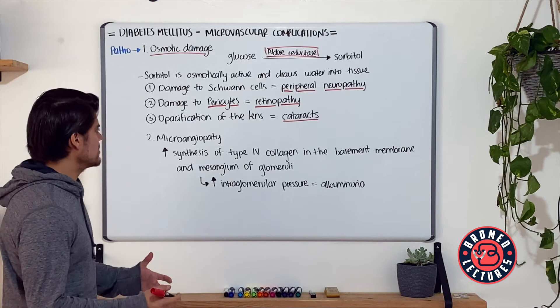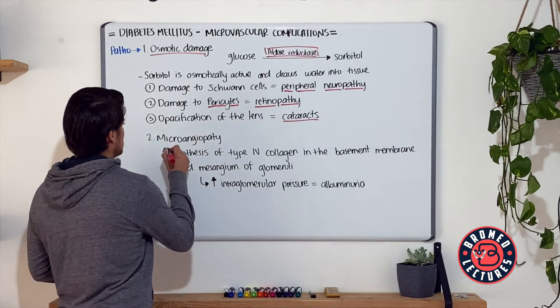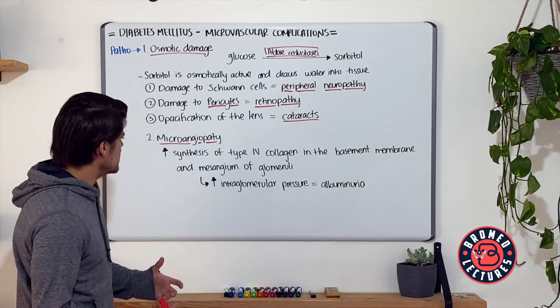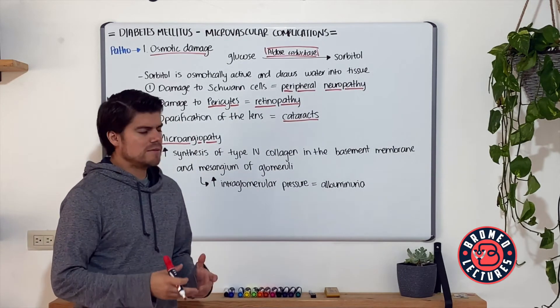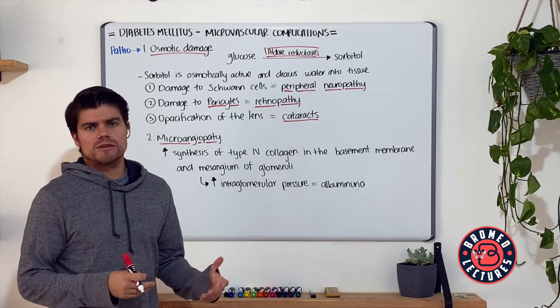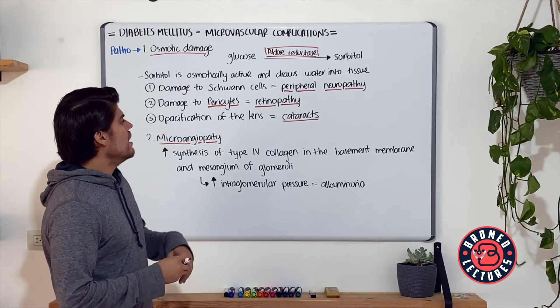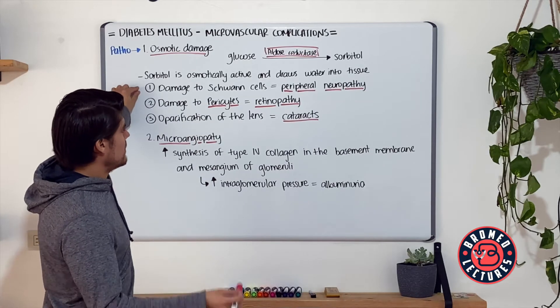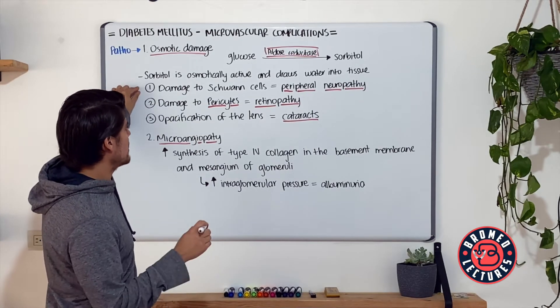For the second mechanism, we have microangiopathy. Remember we discussed hyaline arteriosclerosis with the same mechanism. If it involves the vasculature of the nerves, it's going to unfold as neuropathy, and it's going to add up to the Schwann cell effect we had with osmotic damage.